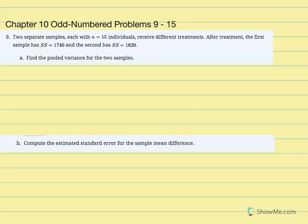Chapter 10, odd number problems 9 through 15. Number 9: two separate samples, each with n equal to 15 individuals, receive different treatments. After treatment, the first sample has sum of squared deviations equal to 1740 and the second has sum of squared deviations equal to 1620. Find the pooled variance for the two samples.